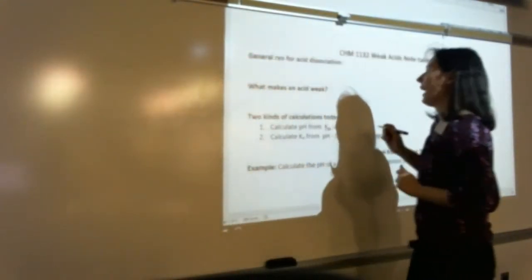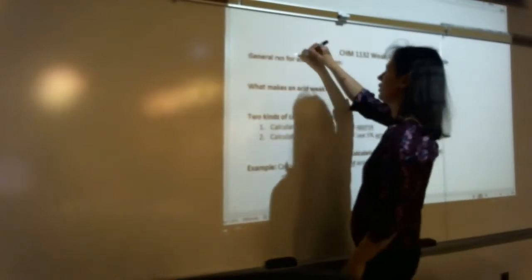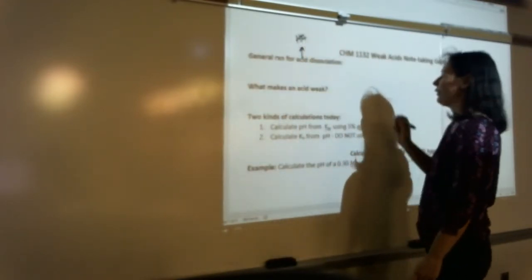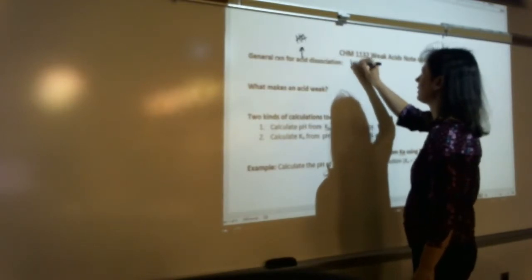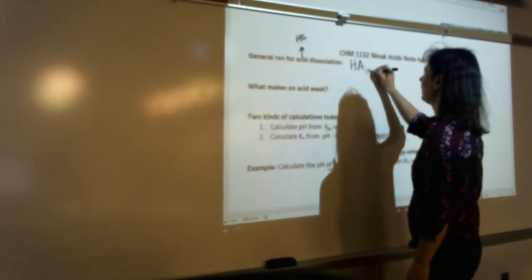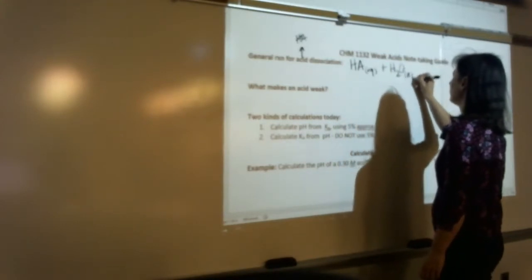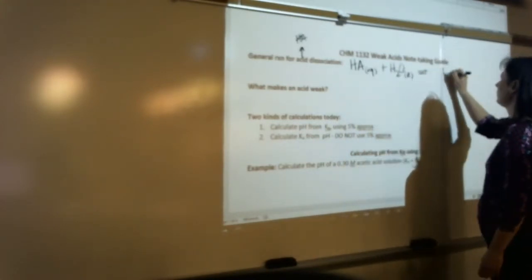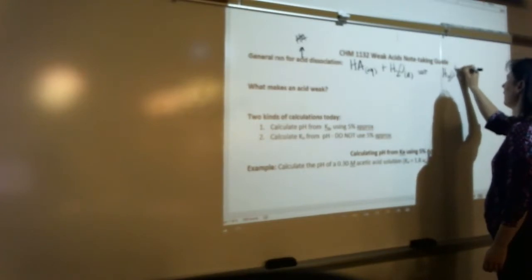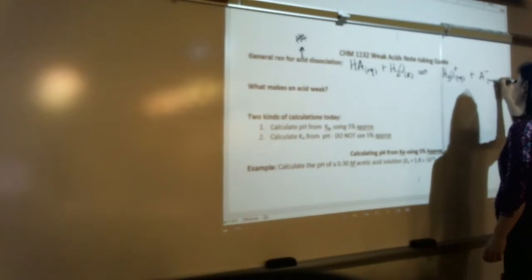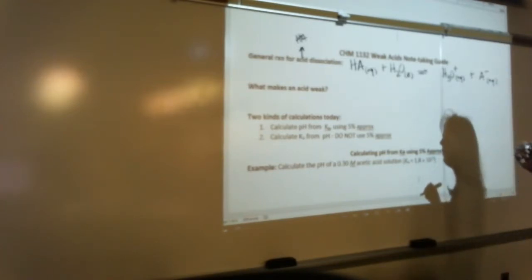What's the general reaction for an acid dissociation? We call our generic acid just HA, right, because we're just laughing all the time about how much fun we have in this class. So HA reacts with water, which is a liquid, and that is in equilibrium with H3O+ and whatever the anion is, right?